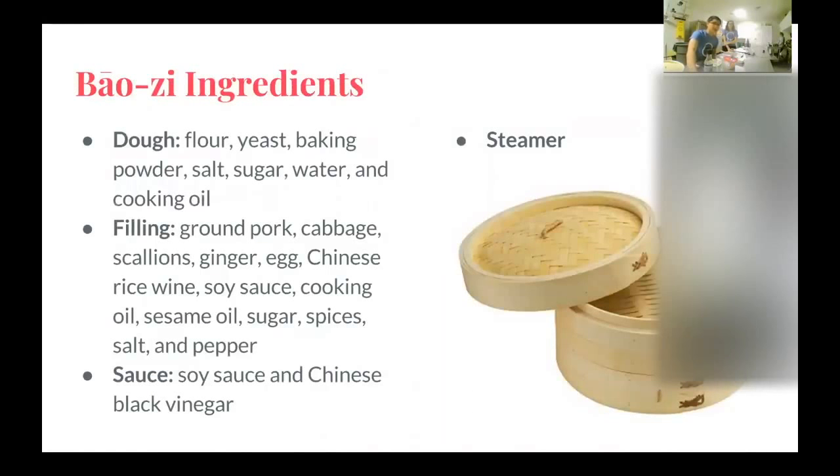So now the Baozi ingredients, you can see right there, there's dough, filling, and then there's the sauce. So it's a typical dough recipe. But the filling consists of pork, cabbage, scallions, ginger, and egg. And for the real flavor that's in it, you need Chinese rice wine, soy sauce, cooking oil, sesame oil, sugar, spices, salt, and pepper.